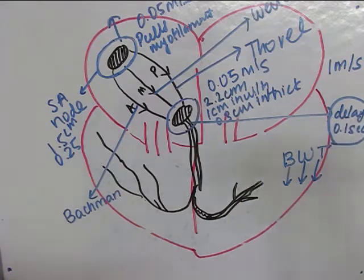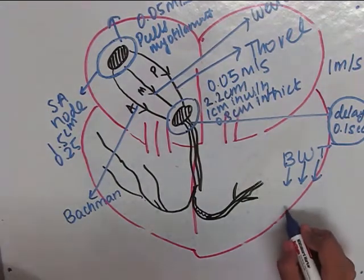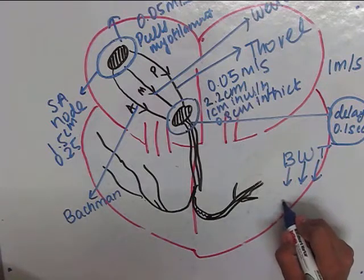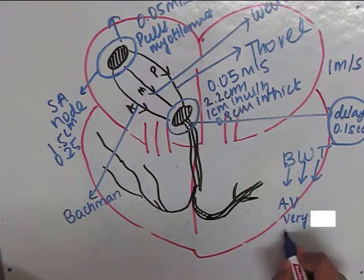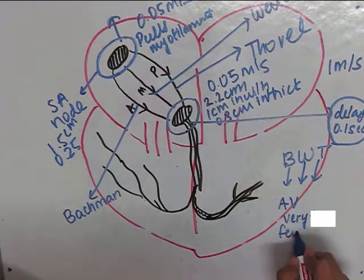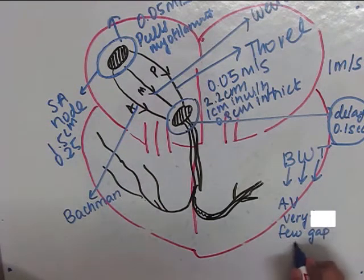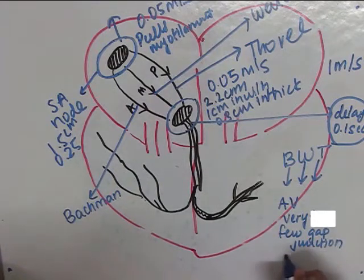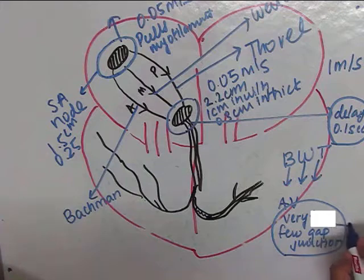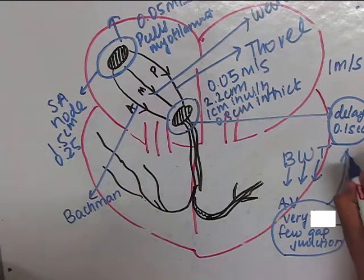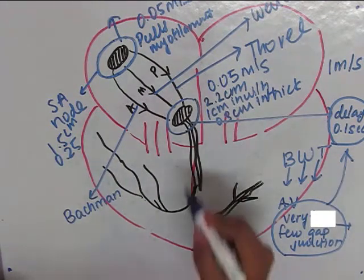I'll tell you why this delay is caused. Majority of the cells present in the AV node are very small and there are very few gap junctions. Due to these two properties there is a slower conduction of action potentials and hence the delay.